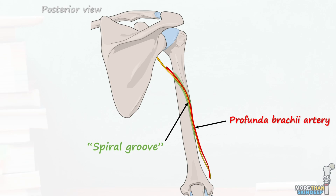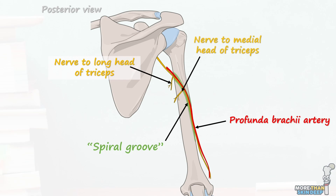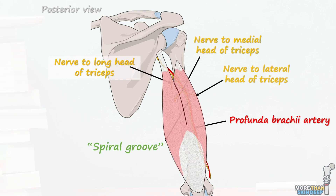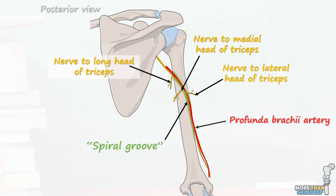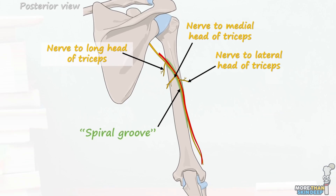The specific branching pattern of the radial nerve in this region is variable and controversial in the literature, but importantly it produces a number of branches in and around the spiral groove. The first three are all motor branches to the long, medial, and lateral heads of the triceps brachii muscle, which lies over the top of the nerve. This three-bellied muscle acts as the main extensor of the arm at the elbow. Then we have the long specific nerve to the anconeus muscle, which may arise as its own entity or as a branch of the nerve to the lateral head of the triceps.